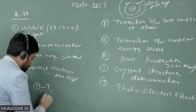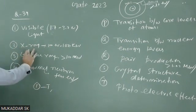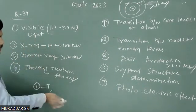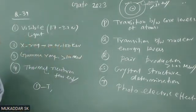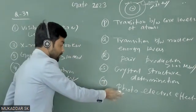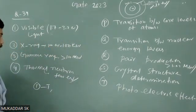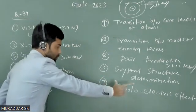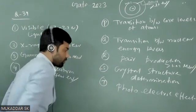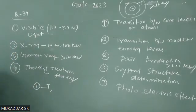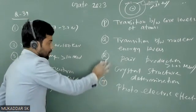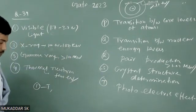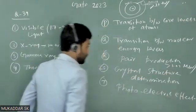Now for x-ray: x-ray can do crystal structure measurement since it has sufficient energy. It can also do the photoelectric effect because for that we only need energy of the order of one or two electron volts, and x-ray has more than sufficient energy. So x-ray can do both photoelectric effect and crystal structure determination. It cannot do pair production because its energy range is 100 eV to 100 keV, whereas pair production requires mega electron volt energies.